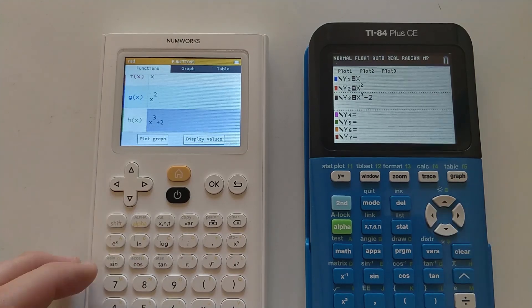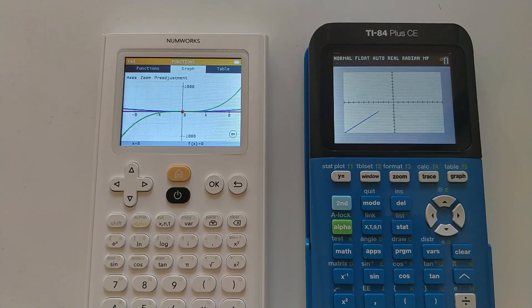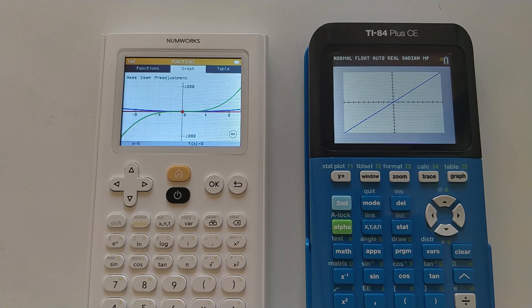Another advantage this has is the speed of the calculator. Take a look at these two calculators graphing the same three equations. Numworks does it nearly instantly, while the CE takes several seconds to catch up.